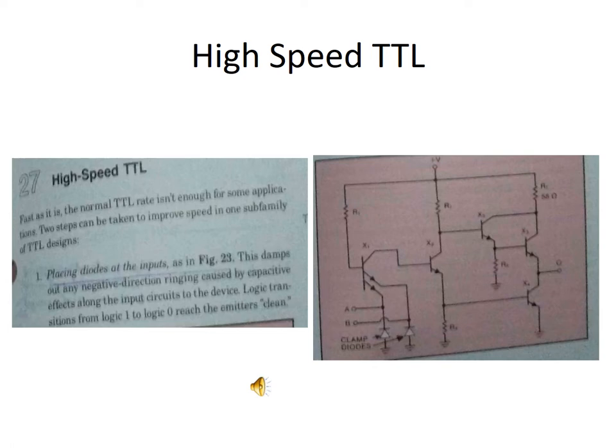This is the normal TTL, and it isn't sufficient for some applications, so two steps can be taken to improve the speed. In this case, we provide the clamp diode at the input. At this time, any negative floating current caused by the capacitive effect can be suppressed, so by this way we provide the high-speed transistor-transistor logic function.